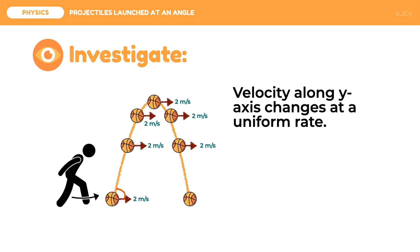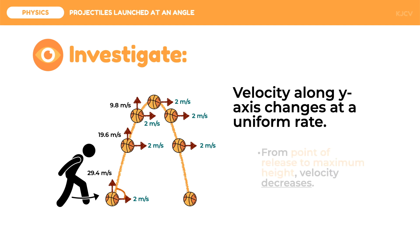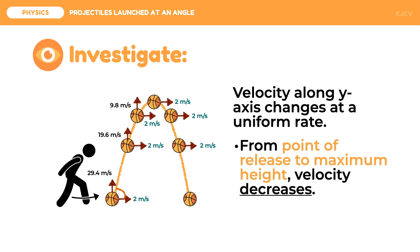In this case, we need to consider different directions along the y-axis. First, when the ball is kicked at an angle, it moves upwards. Suppose we have the following data. These data agree with our knowledge on the velocity along y. However, it decreases by 9.8 meters per second. This means that from the point of release up to the maximum height, the velocity decreases. This happens because gravity, which is 9.8 meters per second squared, is acting on the projectile.